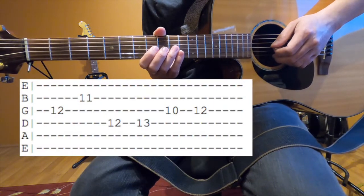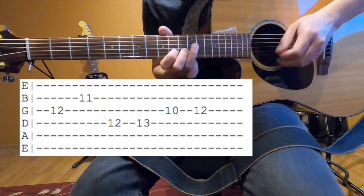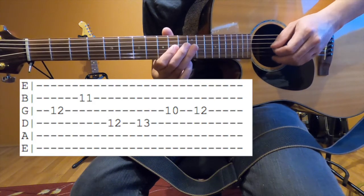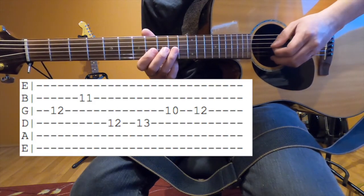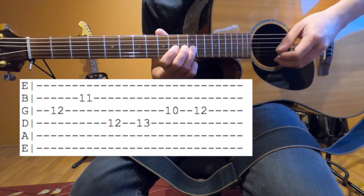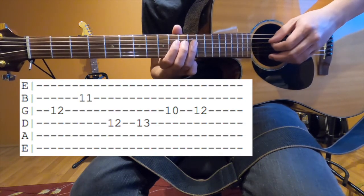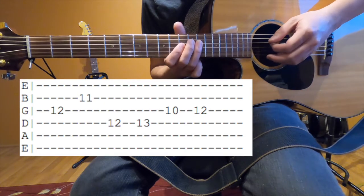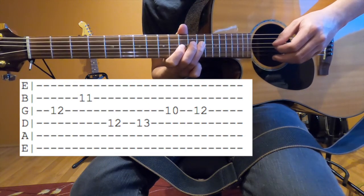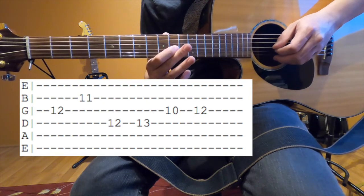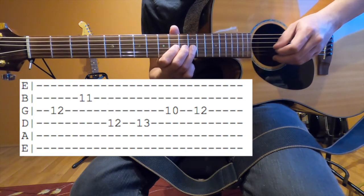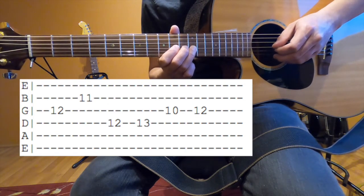The second guitar does this. Which is a slide to 12 on the G string, 11 on the B string, 12 on the D string, 13 on the D string, 10 on the G string, and 12 on the G string.